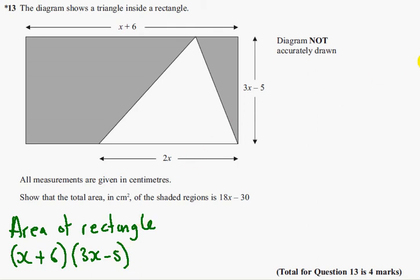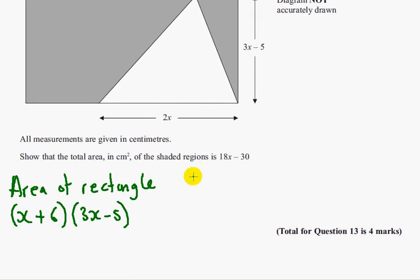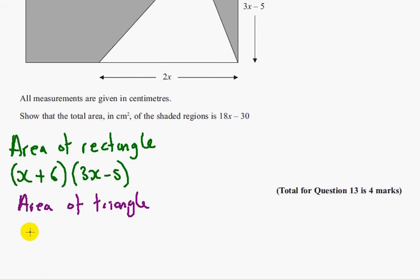Now the area of the triangle, a bit more tricky. Let's do it in a different color. Area of triangle is going to be 2x times by 3x minus 5 divided by 2. So 2x times by 3x minus 5 all over 2.